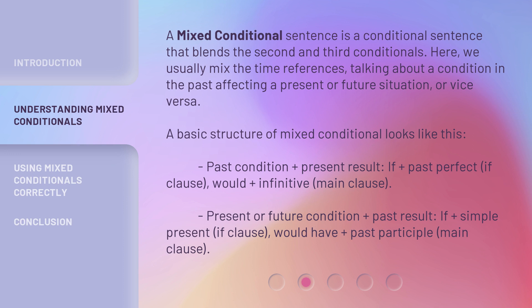A mixed conditional sentence is a conditional sentence that blends the second and third conditionals. Here, we usually mix the time references, talking about a condition in the past affecting a present or future situation, or vice versa. The basic structures are: past condition plus present result — 'if' plus past perfect in the if-clause, 'would' plus infinitive in the main clause; and present or future condition plus past result — 'if' plus simple present in the if-clause, 'would have' plus past participle in the main clause.